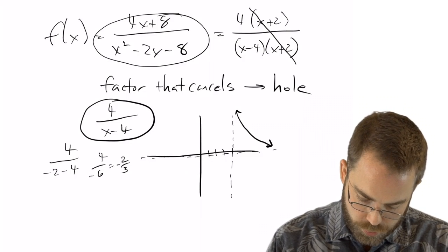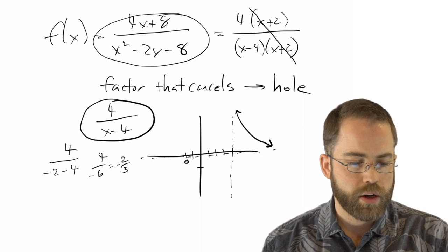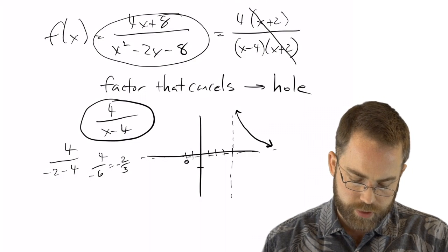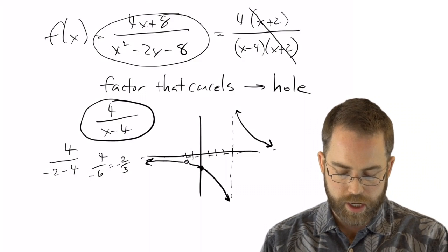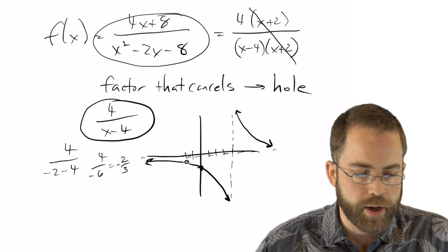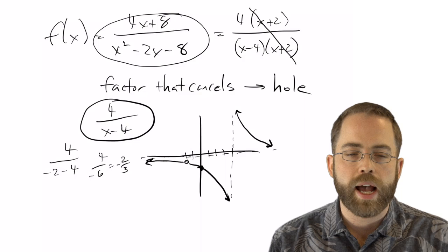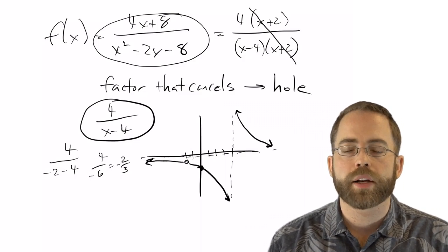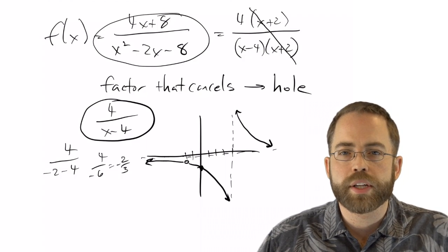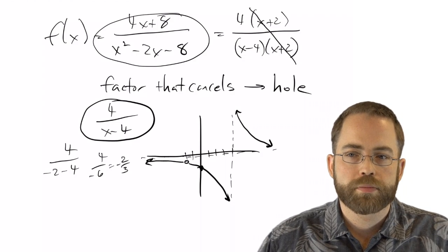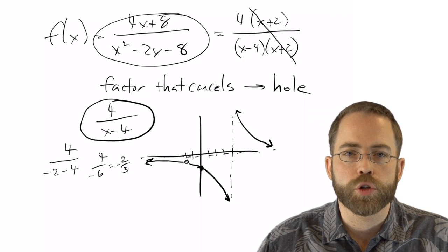So at x=-2, I mark the hole at negative 2 thirds. The y-intercept — plugging in zero — gives negative 1, another useful point. I can then connect the dots and draw the graph with the hole marked. To summarize everything: test the top for x-intercepts, test the bottom for vertical asymptotes, plug in zero for the y-intercept, and compare top and bottom. If the top wins it tends towards infinity; if evenly matched look at coefficients; if the bottom wins it tends towards zero. If a factor cancels top and bottom, that makes a hole, and you graph the simplified version but mark the hole where the original factor was.